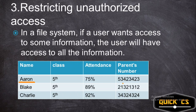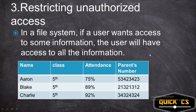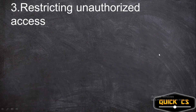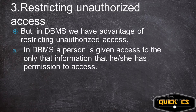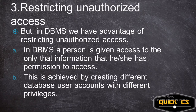While Aaron is checking his attendance, he can also see the parent contact numbers of Blake and Charlie. What Aaron came in for and what he can access are two different things — this is very risky. In DBMS, the advantage is restricting unauthorized access by giving the person only the exact data or information that he or she is permitted to have.